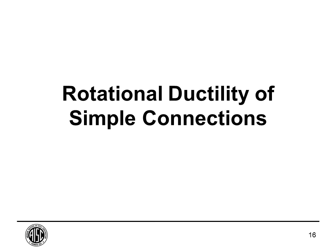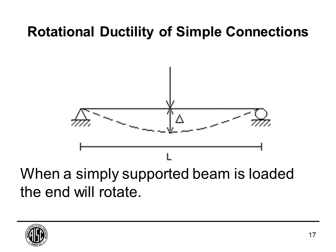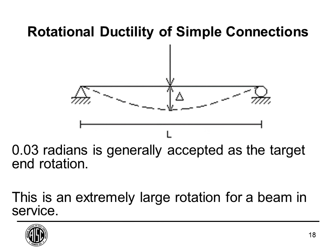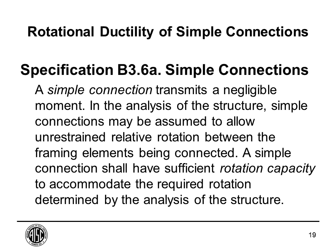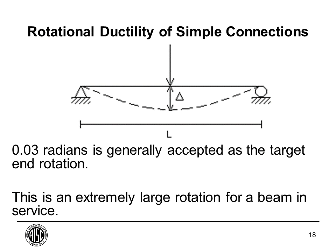For rotational ductility of simple connections, when you load a simple beam—whether a point load or uniform load—the beam deflects and the ends rotate since the end connections are assumed to be pinned. When design procedures or tests for shear connections are configured, there's a de facto target of 0.03 radians. However, that is an extremely large rotation for a beam in service. You're probably never actually going to see 0.03 radians, which gives you more flexibility when looking at shear connections in practice.